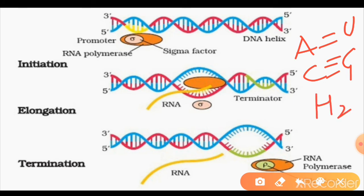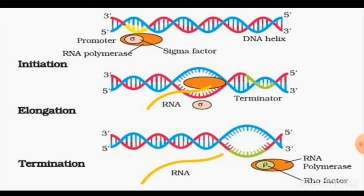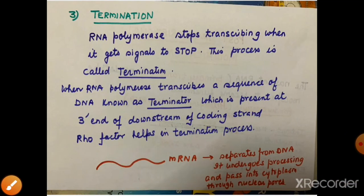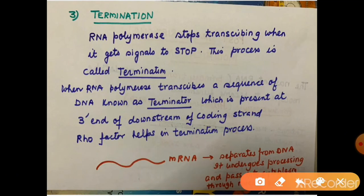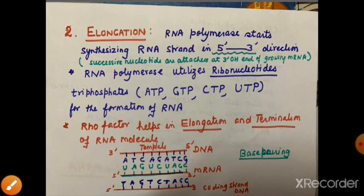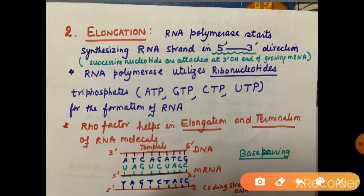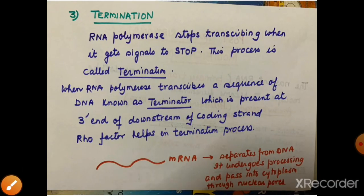RNA polymerase continues to transcribe the sequence of DNA. As elongation proceeds, the messenger RNA grows longer. The RNA polymerase moves along the template strand in the 3' to 5' direction while synthesizing the new RNA in the 5' to 3' direction.